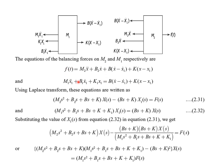Applying the Laplace transform to these two equations, we write: (M2·s² + B2·s + B·s + K)X(s) − (B·s + K)X1(s) = F(s). For the second equation: (M1·s² + B1·s + B·s + K + K1)X1(s). By rearranging and solving for X1(s), we obtain an expression combining the Laplace domain terms.